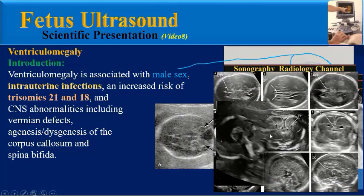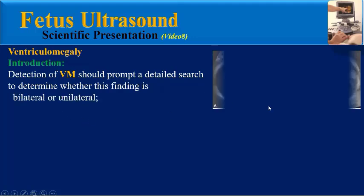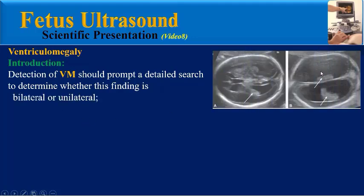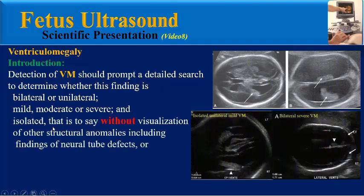Detection of ventriculomegaly should prompt a detailed search to determine whether the finding is bilateral or unilateral, mild, moderate or severe, and isolated — meaning without visualization of other structural anomalies including findings of neural tube defects — or non-isolated.